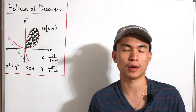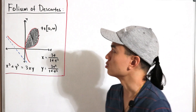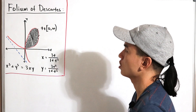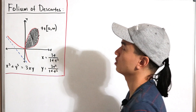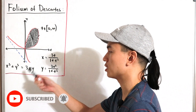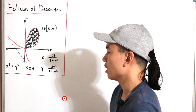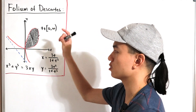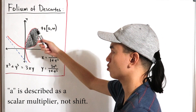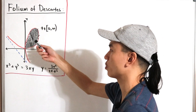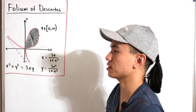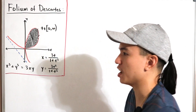Welcome back to another video. Today we have a graphical image of what's described as the Folium of Descartes, which has the equation x³ + y³ = 3xy. Here, a describes the shift, so a = 1 gives this algebraic curve. The asymptote is defined as x + y + a = 0.